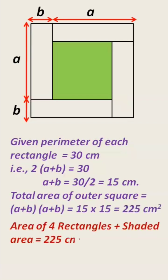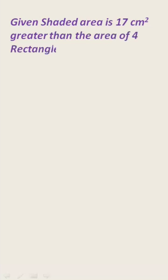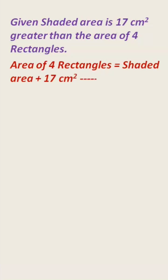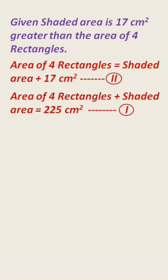Therefore, area of 4 rectangles plus shaded area equals 225 cm². Take it as the first equation. Also, given shaded area is 17 cm² greater than the area of 4 rectangles, therefore area of 4 rectangles is shaded area plus 17. Take it as the second equation.